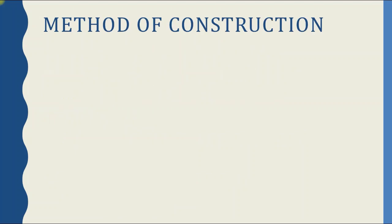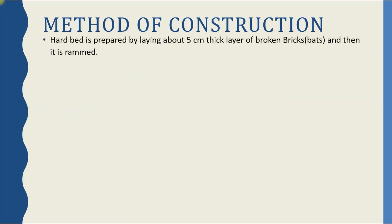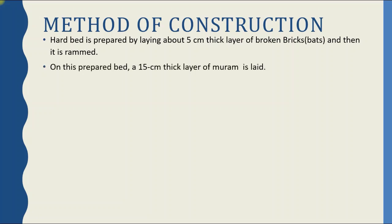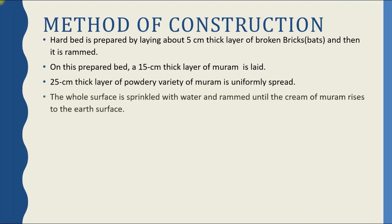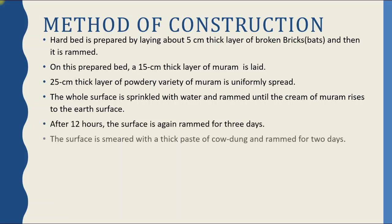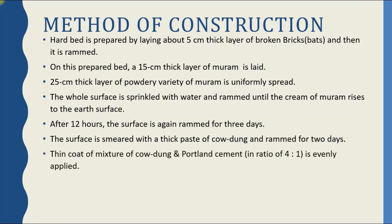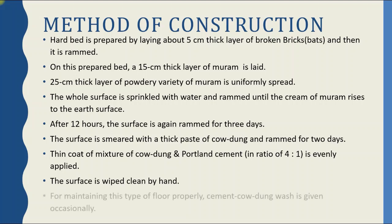The method of construction of murram flooring: a hard bed is prepared by laying a 5 cm thick layer of broken bricks and then it is rammed. On this prepared bed, a 15 cm thick layer of murram is laid. On this, a 25 cm thick layer of powdery variety of murram is uniformly spread. The whole surface is sprinkled with water and rammed until the cream of murram rises to the surface. After 12 hours, the surface is again rammed for 3 days. Then the surface is smeared with thick paste of cow dung and rammed for 2 days. A thin coat of mixture of cow dung and Portland cement in the ratio 4:1 is evenly applied, and the surface is wiped clean by hand. For maintenance, cement cow dung wash is given occasionally and whenever required.